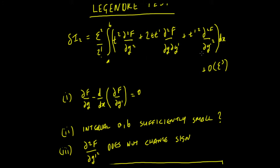We are able to say via the Legendre test that the sign of this whole equation is determined by the sign of this particular part: the partial squared f upon partial y-prime squared. We're saying that this part of the equation dominates the rest of the equation.